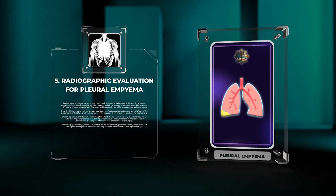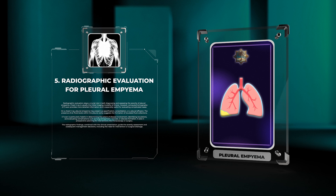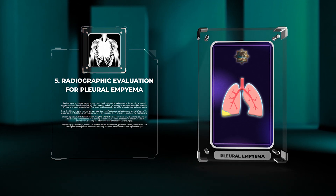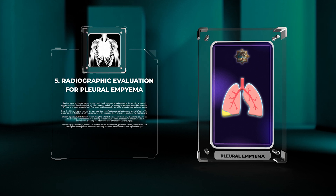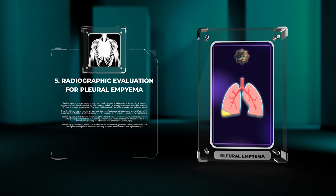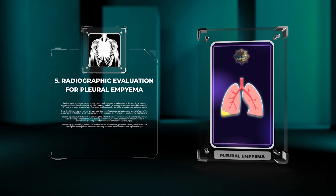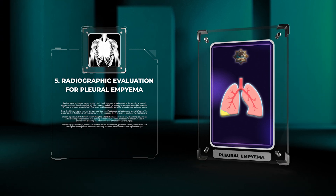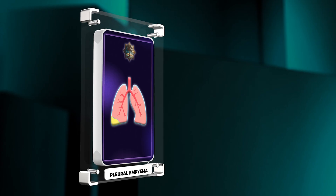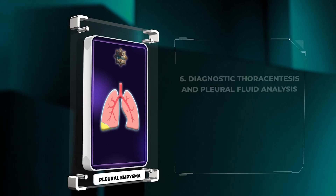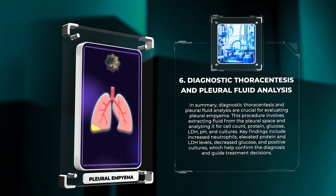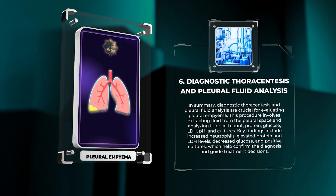CT scan is particularly helpful in determining the extent of disease involvement, identifying loculations, and evaluating complications such as lung entrapment, necrosis, or abscess formation. It aids in preoperative planning for interventions like thoracoscopy or surgery. The radiographic findings combined with the clinical presentation guide severity assessment and management decisions, including the need for intervention or surgical drainage.